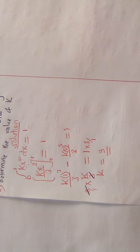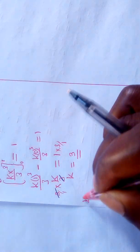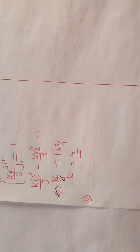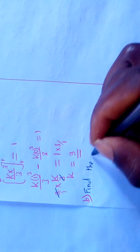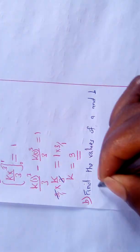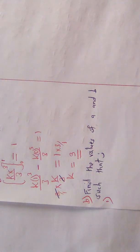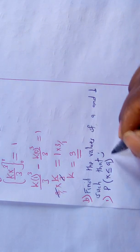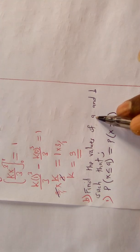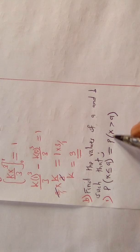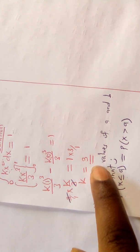Now let's look at Part B. Under Part B, you are being told to find the values of A and B such that: Roman numeral 1 — the probability of X ≤ a equals the probability of X > a. Remember, we've already found k = 3, so we substitute 3 wherever k appears.